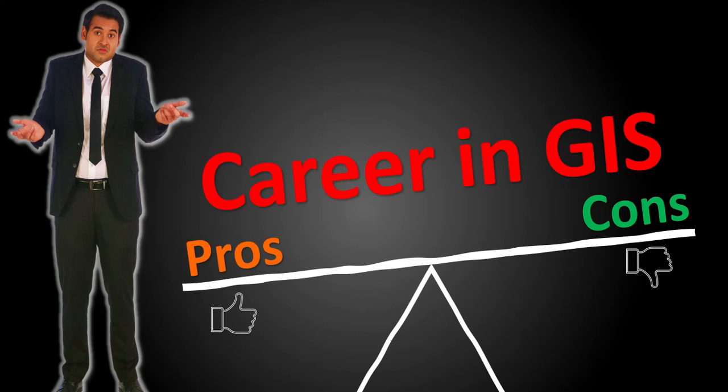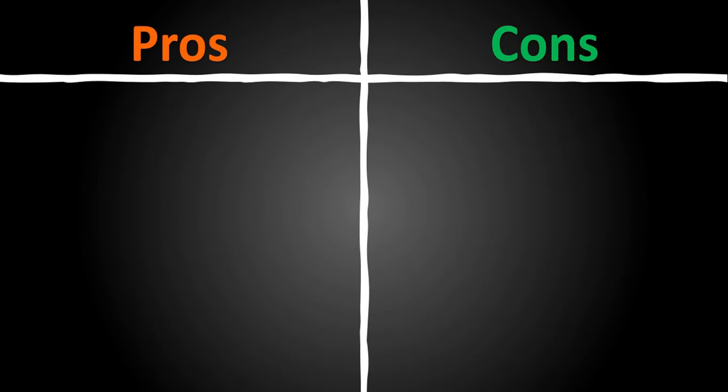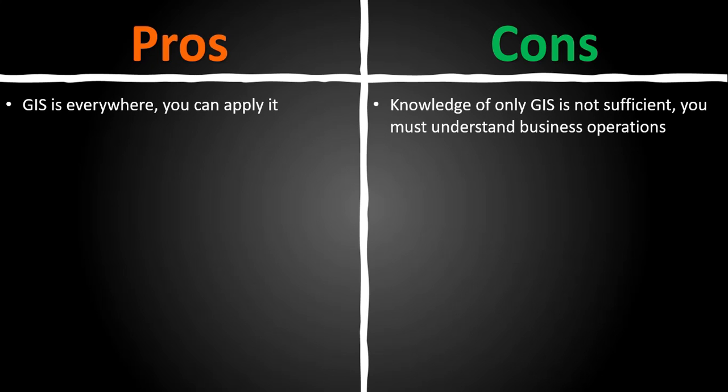But there is a problem. You should understand that the business of the business is to do the business. If you are working in a power utility, their business is to generate, transmit and distribute power to the end-user and ultimately make profit. They may use GIS only if it contributes to improving their business efficiency and helping achieve their goals. In order to serve as a GIS professional in any industry, you must know the regular business operations of that industry, and then with your spatial thinking abilities you may be able to apply GIS and help achieve their goals. In other words, knowledge of just GIS is not sufficient — you must know the business operations.